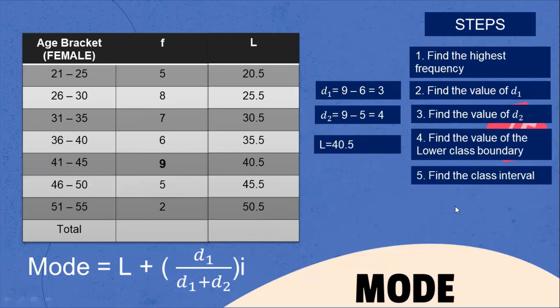Next, find the class interval. We count from 41 to 45: 41, 42, 43, 44, 45 — there are five intervals. So the class interval I = 5.